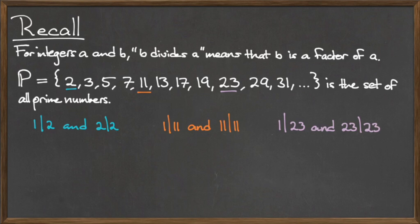Finally, let's look at 23. If we use the same restrictions, then we find that the only two positive integer divisors of 23 are 1 and 23 itself. So we write 1 divides 23 and 23 divides 23.